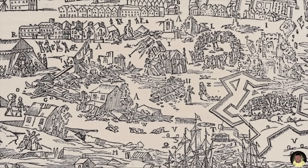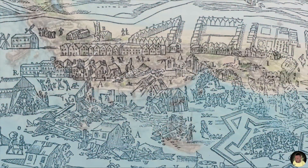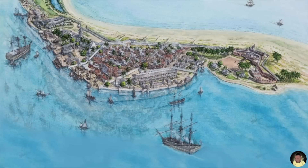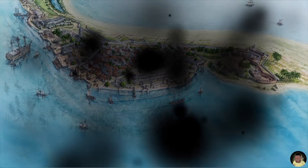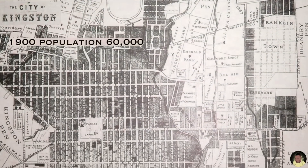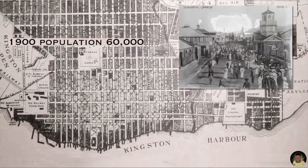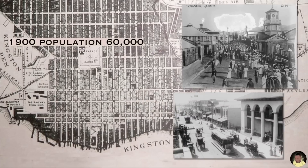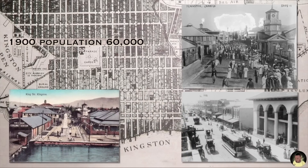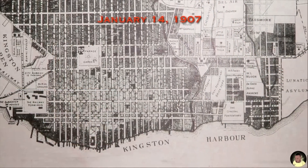An additional 3,000 deaths followed from injuries and disease. Port Royal was partially rebuilt, then mostly destroyed by a fire in 1703, and Kingston became the major city. By the early 1900s, Kingston had grown to a population of 60,000. Then on January 14, 1907, a magnitude 6.5 earthquake struck the city.